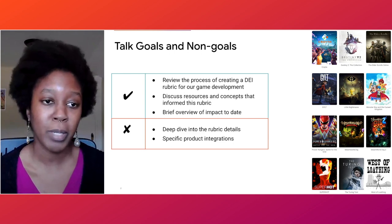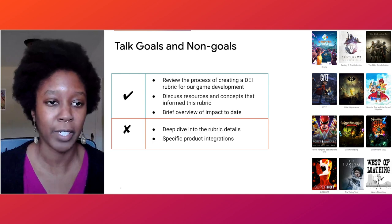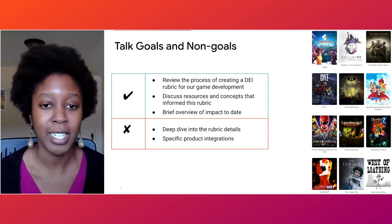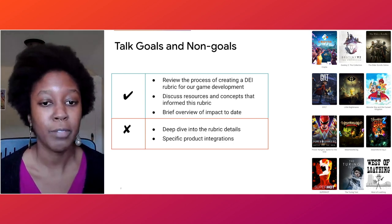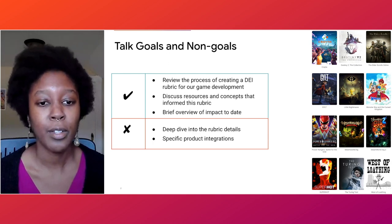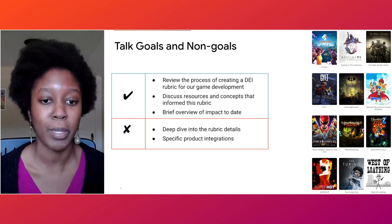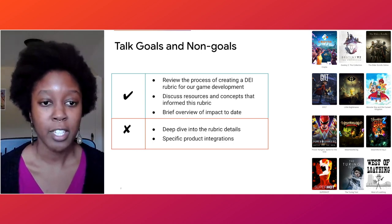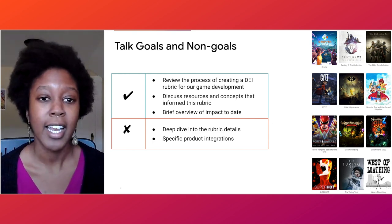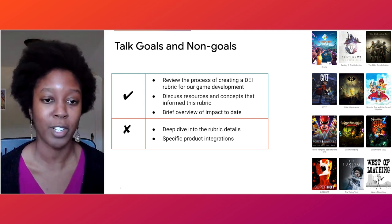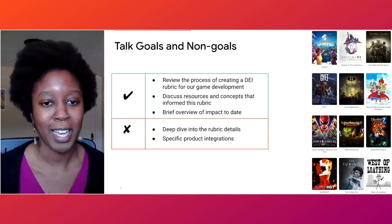I wanted to give a quick overview of what I will and won't be covering in this talk. I will be covering the process for reviewing our game development rubric and for understanding DEI and the role it plays in our process. I'll also discuss core resources and concepts that informed this work, and give a brief overview of the impact this resource has had to date. What I won't be covering is a specific deep dive into the rubric details or specific product integrations, as we are still in an iterative stage collecting data and finalizing it. We're hopeful the process and types of questions we've been addressing will be useful, and we hope to come back with a deeper dive once finalized.